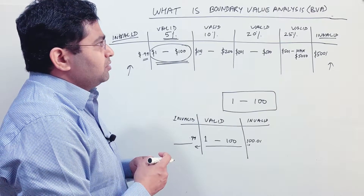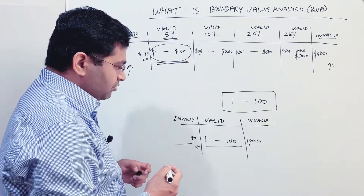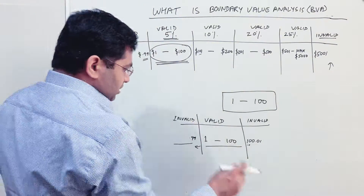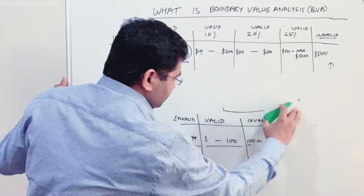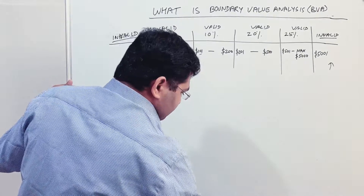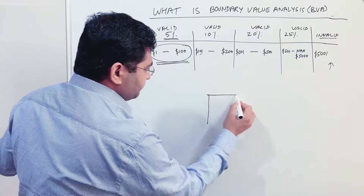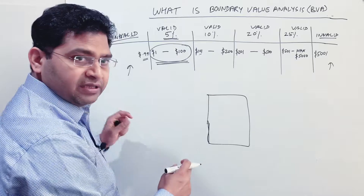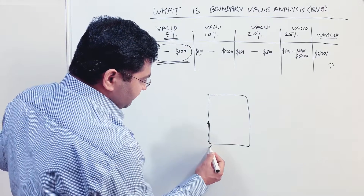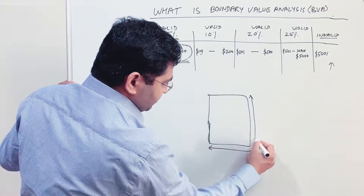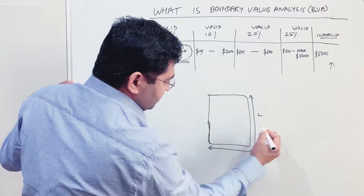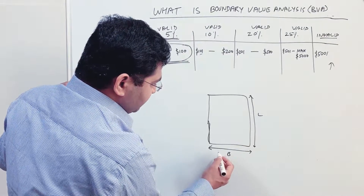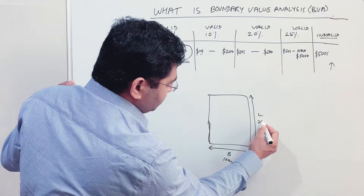Now let's talk about boundary value analysis using a real-world example. Say you are building a house. You have a piece of land with a length and a breadth — this is the length and this is the breadth. Say the frontage is ten meters and the depth is twenty meters.